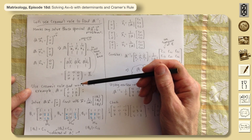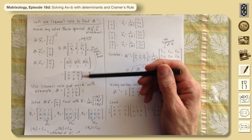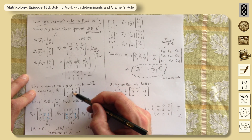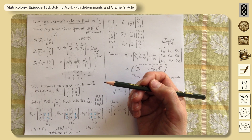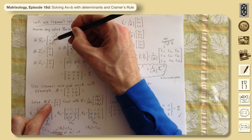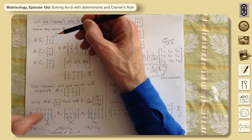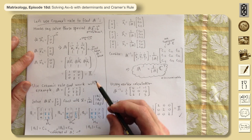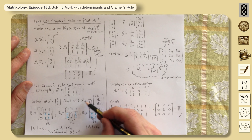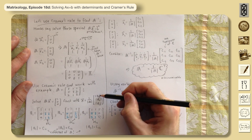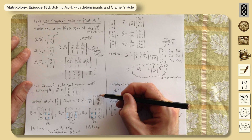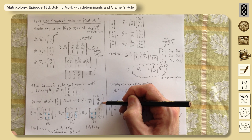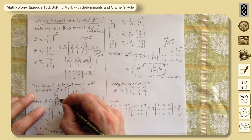Let's go back to our example matrix [1,1,0; 3,2,2; 1,2,1] and find its inverse using Cramer's Rule. We'll solve with b = [1,0,0] first. The formula says: each entry of the solution is (1/det(A)) times the determinant of the matrix A with that column replaced by b.